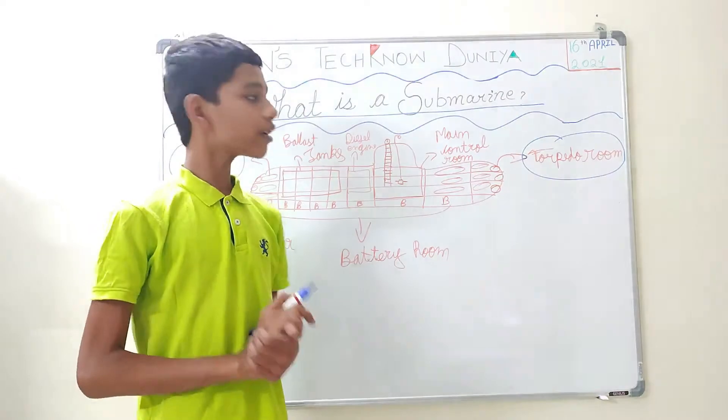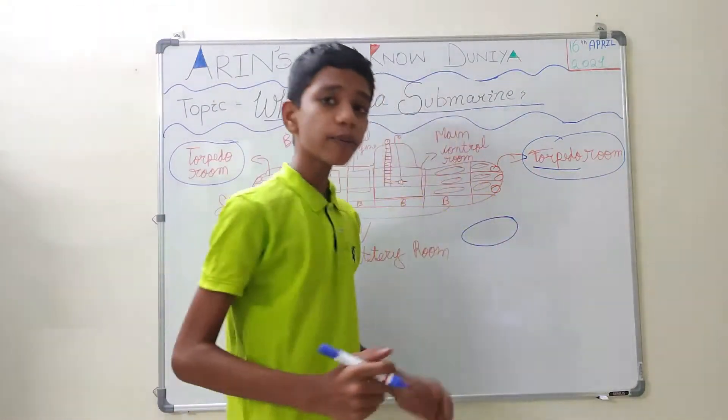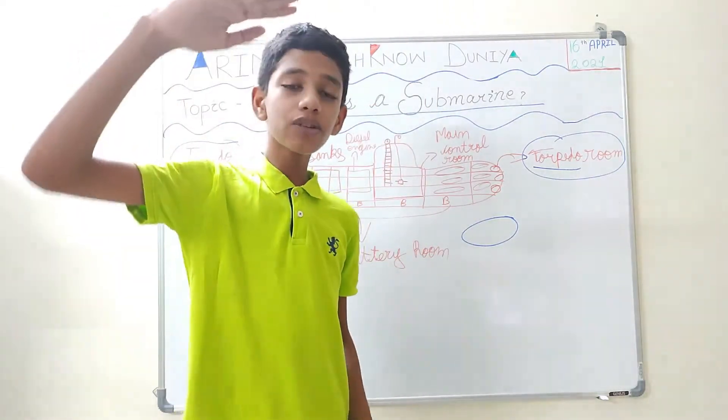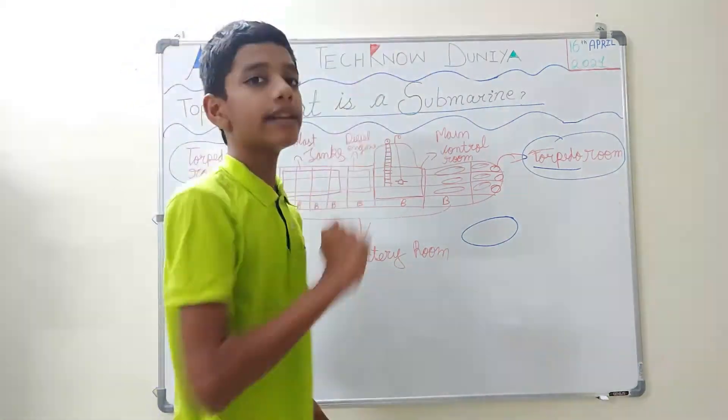Now you must be wondering what is a torpedo. A torpedo is a kind of underwater missile. Like you must have seen in warships or fighting airplanes, they launch the missile and then it goes and hits in the air.